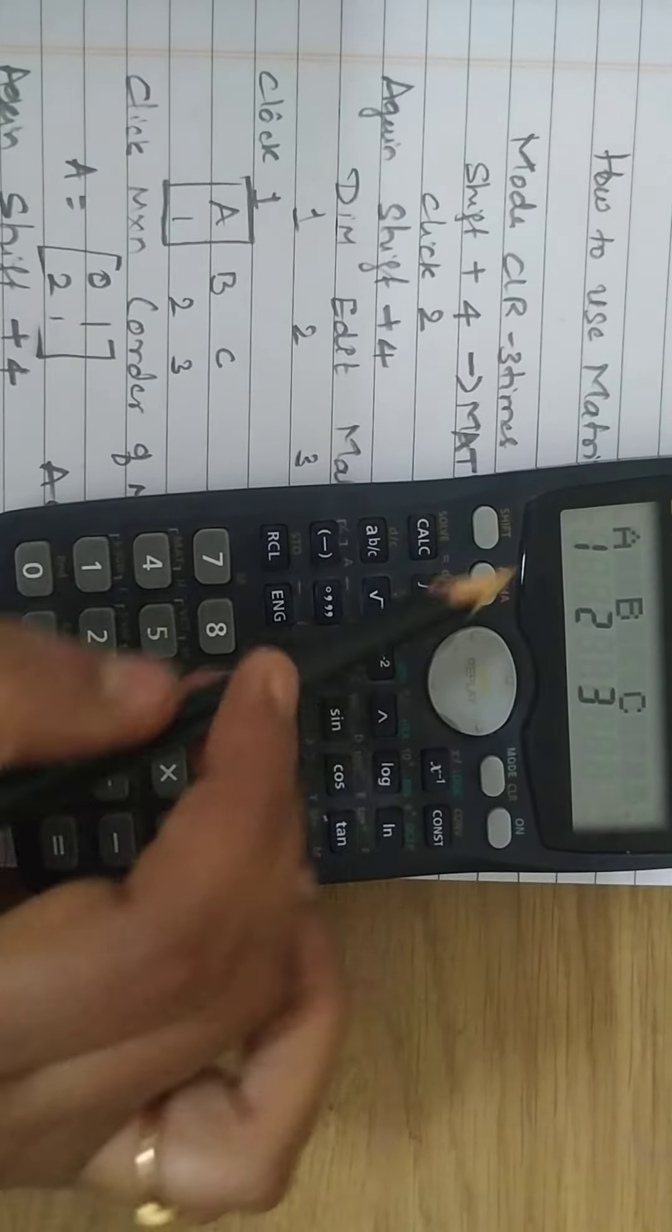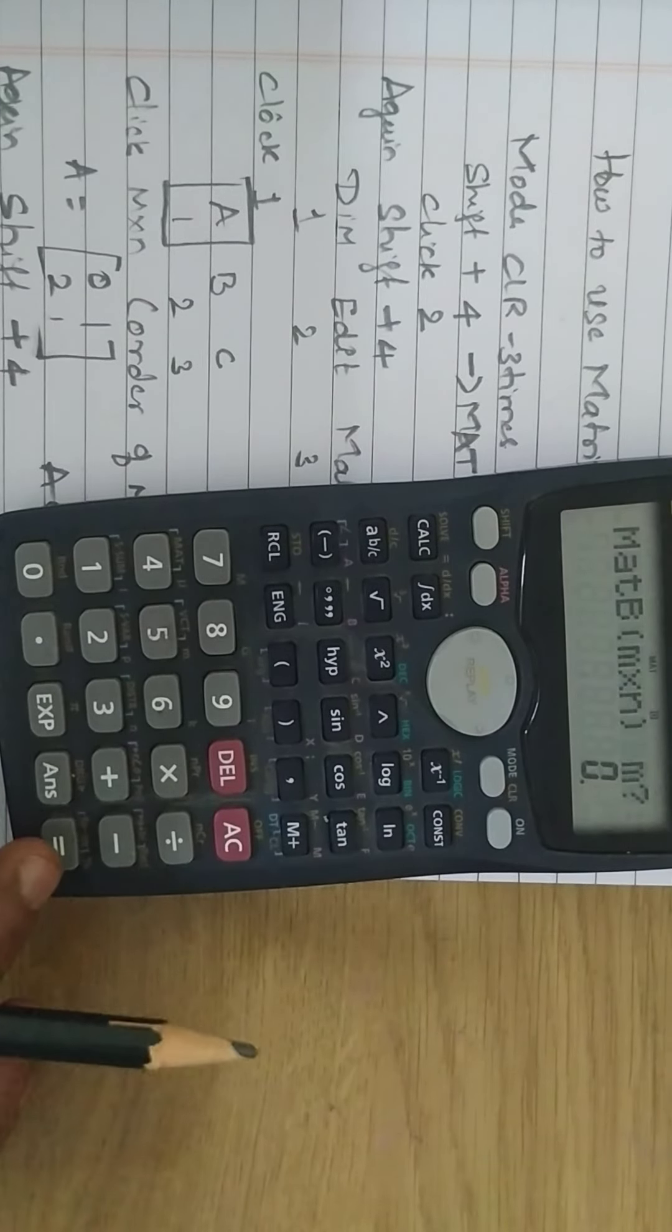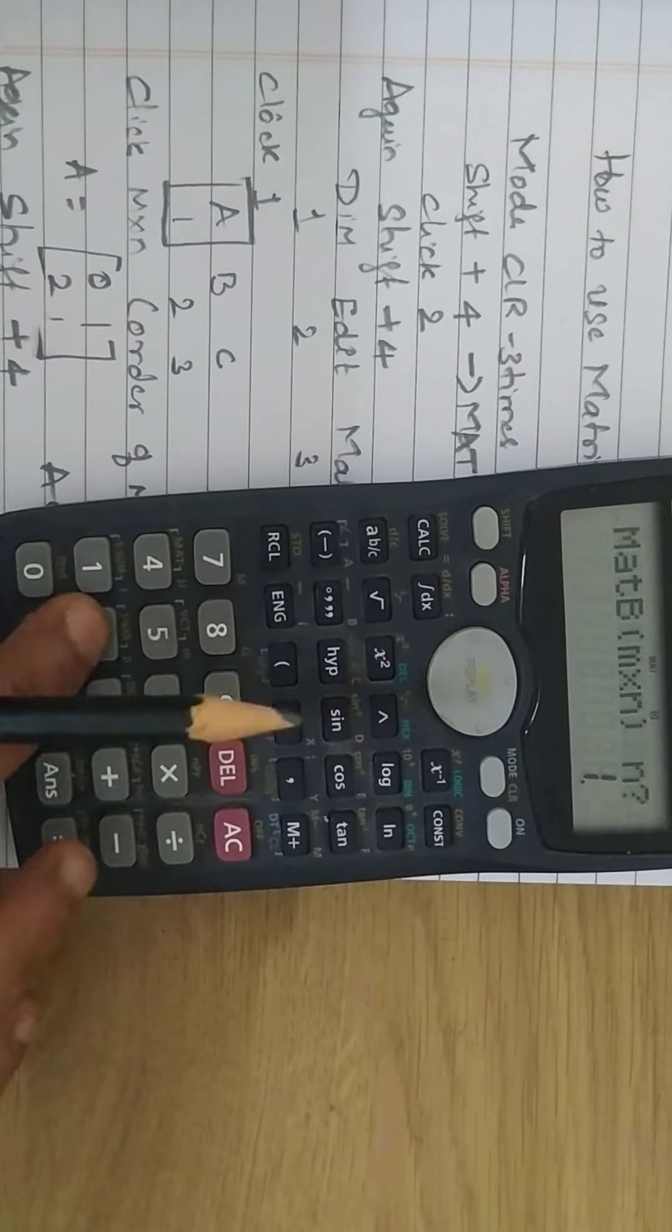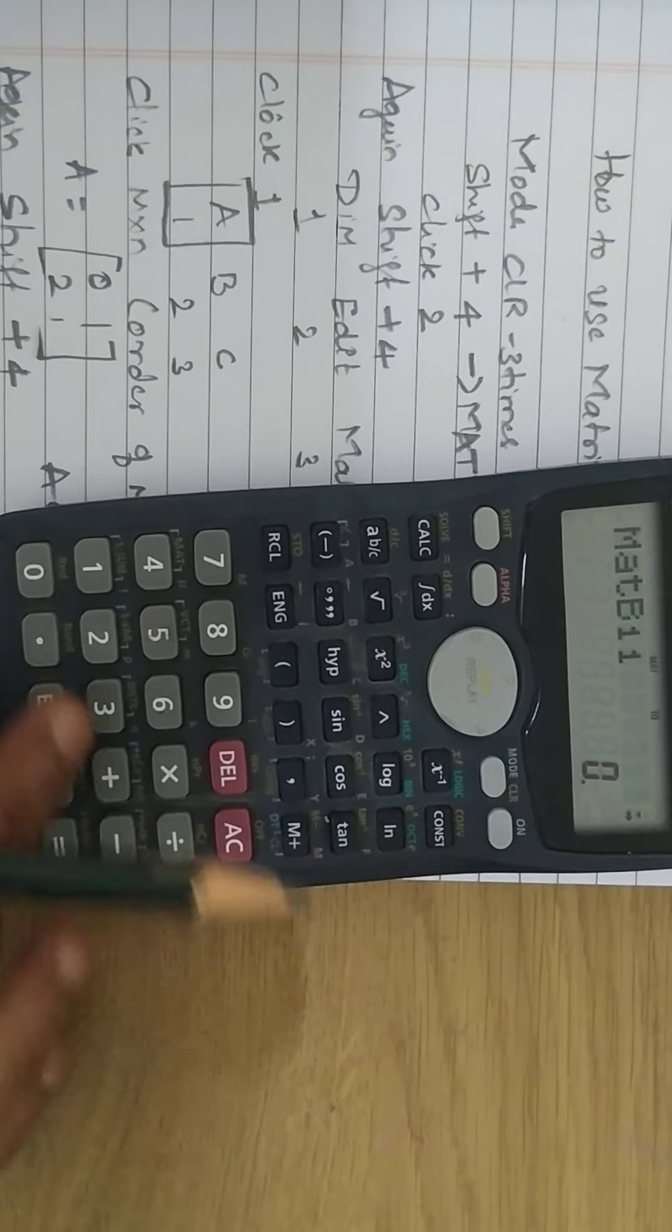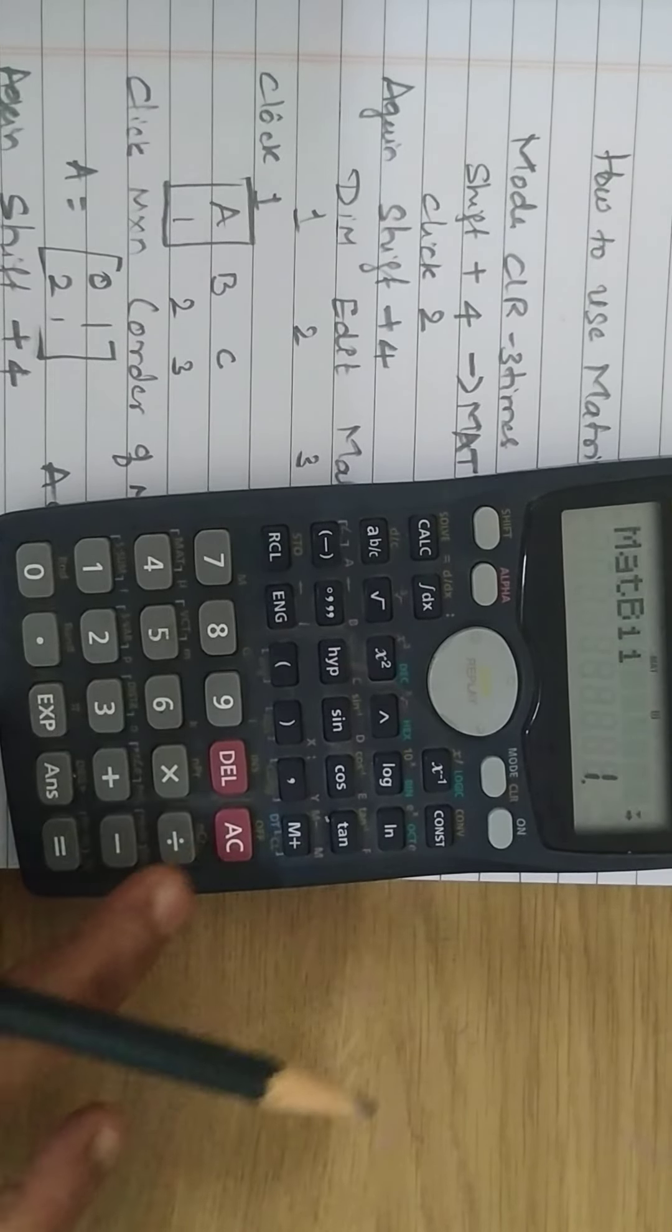Enter and go for matrix B number 2, order 2 cross 2. Enter the values: 1, 1, 2, 1. Come out of the matrix.